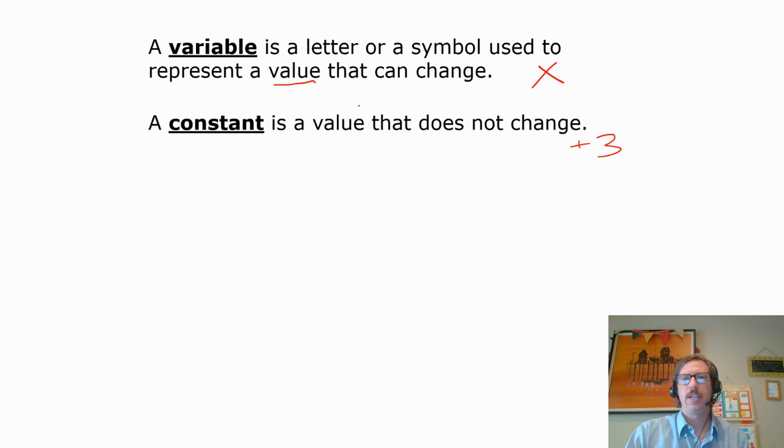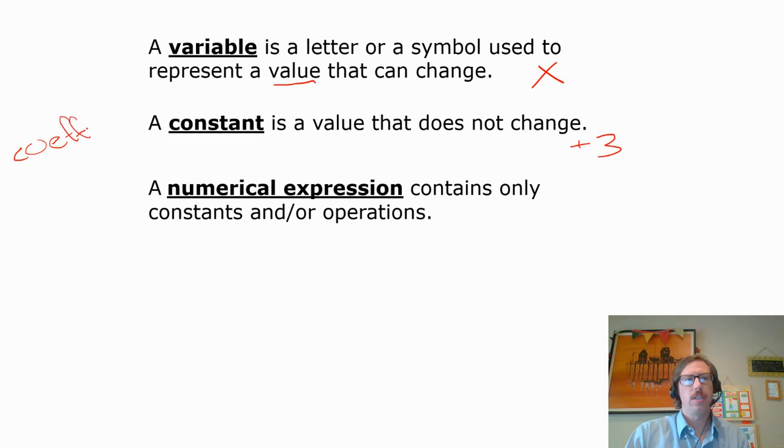A coefficient is missing from this list, but a coefficient is a number in front of the variable. So it's a multiplier, like negative 2x, negative 2 is the coefficient.